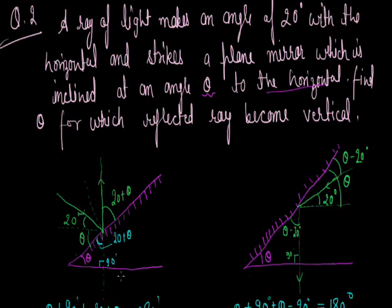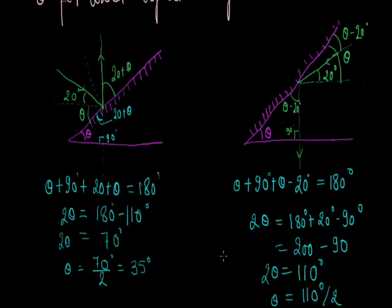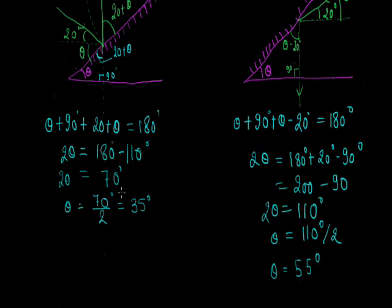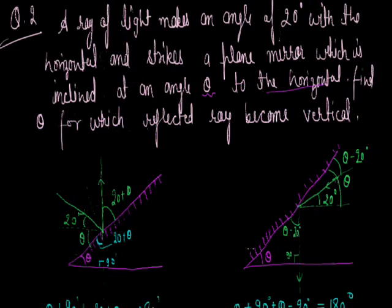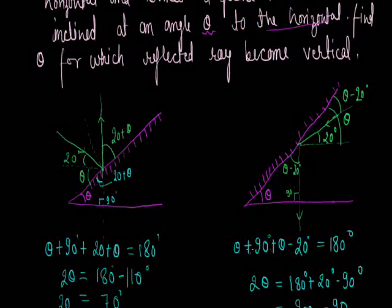So in this question we can give two answers because there are two possibilities. According to the question, the plane mirror is placed at angle theta with the horizontal, but it is not given which direction the reflecting surface faces. In the first case, the reflecting surface faces upward giving theta equals 35 degrees, and in the second case the reflecting surface faces downward giving theta equals 55 degrees. Thank you students. In the next class we will do some more numericals based on mirrors.